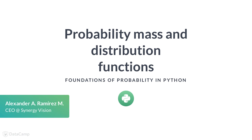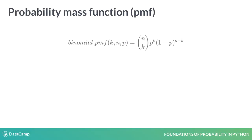A discrete random variable has a finite number of possible outcomes. The probability mass function allows you to calculate the probability of getting a particular outcome for a discrete random variable.